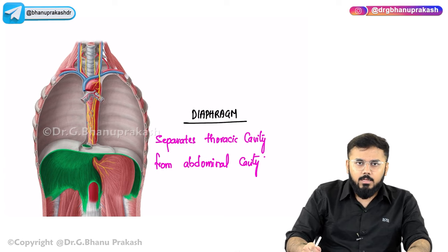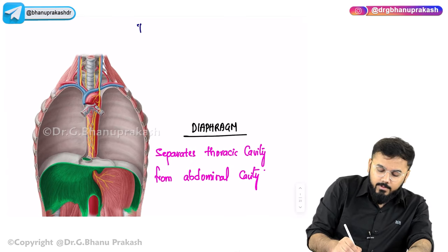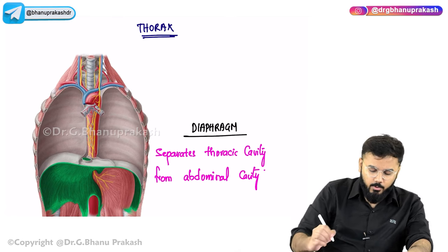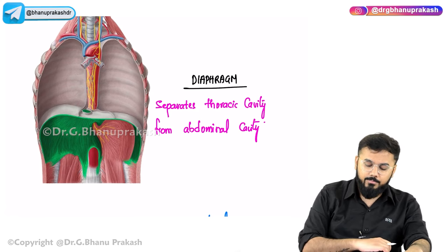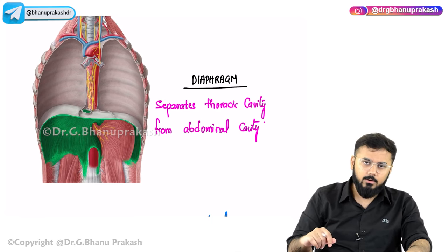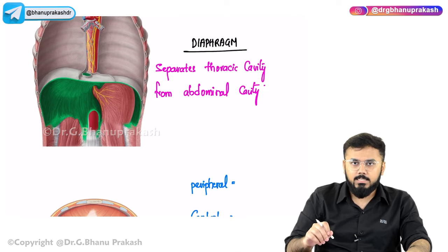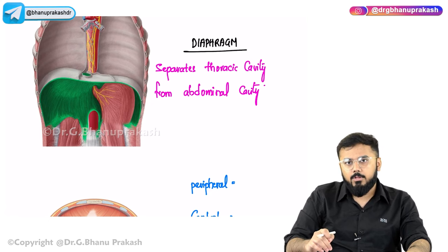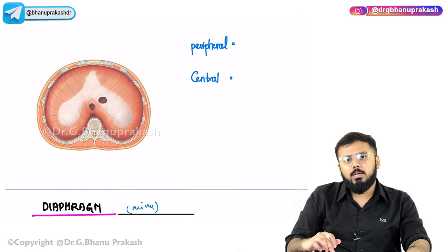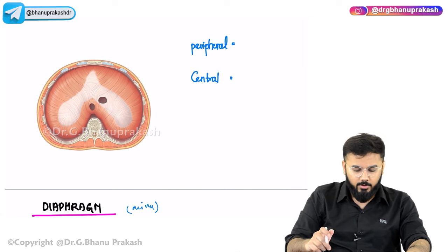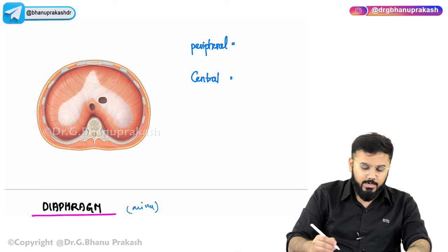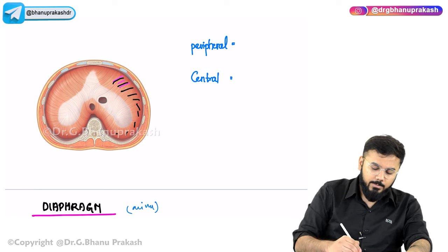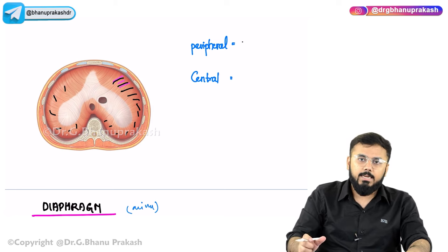Hello guys. We shall be discussing some very important topics related to the thorax. The first important topic we'll focus on is the diaphragm. The diaphragm separates the thoracic cavity from the abdominal cavity. Looking at the diaphragm from the top, there are two important parts: the peripheral part and the central part.